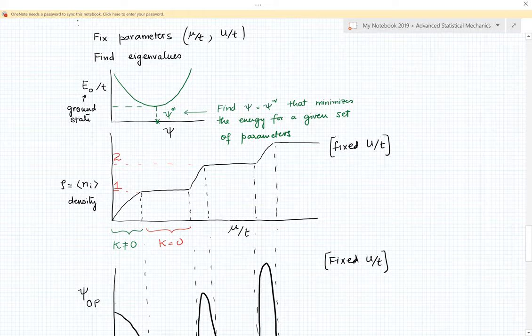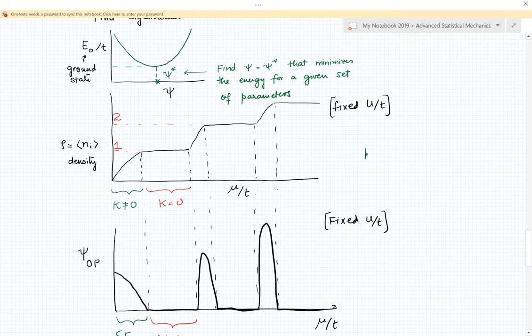We can determine the density which is just the expectation value of b_i^† b_i. What you find is for a fixed U over t, as you vary the chemical potential the density starts with an empty lattice, then the density starts increasing, it reaches one per site, then it flattens and remains one for a whole range of chemical potentials. Again it reaches another critical value of mu, then the density starts changing again, remains flat for another set of mu values. What you're seeing is kappa, the compressibility essentially equal to dn/dmu. It is finite in these regions where the density is changing and zero in the intermediate regions where the density becomes flat.